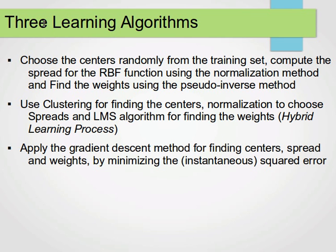There are several learning algorithms for RBF networks. First, randomly choose centers from the training set, compute the spread using a normalization method, and find the weights using the pseudo-inverse method. Second, use clustering to find centers, normalization to find the spreads, and least mean squares to find the weights — this is called the hybrid learning process. Third, apply gradient descent to find the centers, spread, and weights by minimizing the squared error. I hope this gives a good overview of how the RBF network works. Thank you for watching and I'll see you next time.